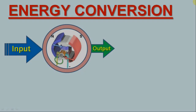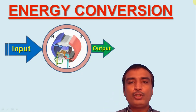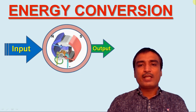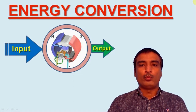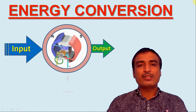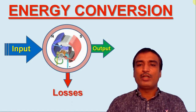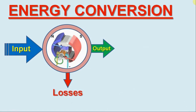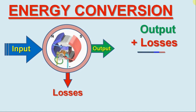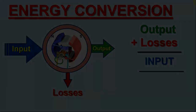In my preceding video lecture, I told you that it is impossible to convert 100% of the input power into the output, since various losses occur in different components of the DC machine. Essentially, the input power must always be equal to the output power plus the losses occurring in the DC machine.